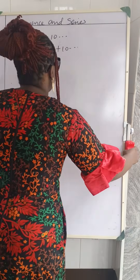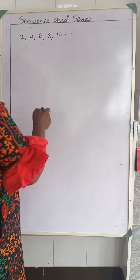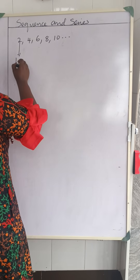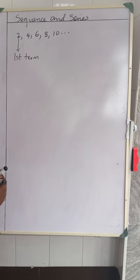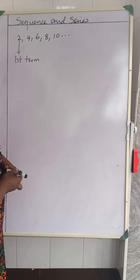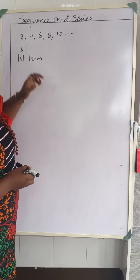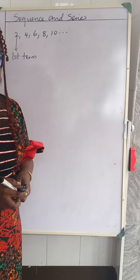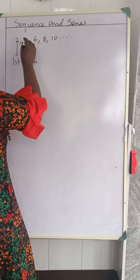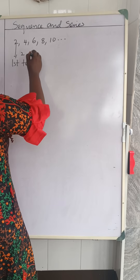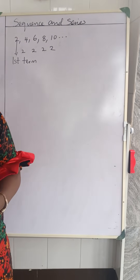Now let's look at this using the same example. In a sequence, this is the first term, down to whichever term they are going to ask you to find. Looking at it, it has a pattern. How do we find the next term? First of all, you look at the first two numbers — the first and the second term — to determine how to find it. The difference there is going to be two. The difference from here is also two, two, and two. So automatically you will know what your next term is going to be.